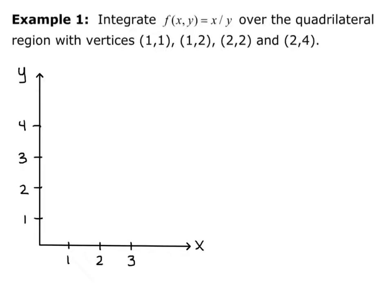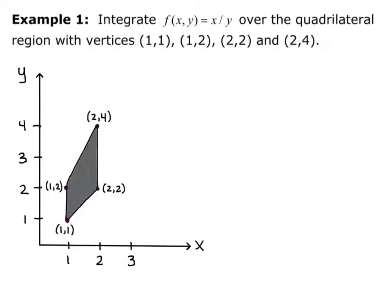What I want to do first is actually sketch out my region. So I have my x-y axes and I'm going to put a dot at each vertex and then connect them. I have this quadrilateral region with vertices (1,1), (1,2), (2,4), and (2,2). And I'm just going to shade that in to indicate that that's the region I'm going to be integrating over.